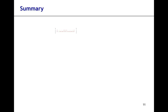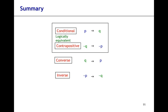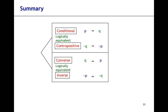In this section, we have learned that a conditional statement means P implies Q; a contrapositive statement means not Q implies not P; a converse statement means Q implies P; and an inverse statement means not P implies not Q. We also know that conditional and contrapositive statements are logically equivalent, and that converse and inverse statements are logically equivalent. However, conditional and contrapositive statements are not logically equivalent to converse and inverse statements.